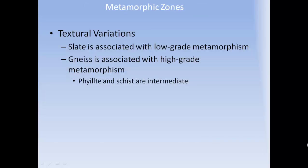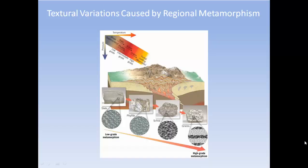Textural variations: slate is associated with low-grade metamorphism and gneiss with high-grade metamorphism, while phyllite and schist are in between. Regional metamorphism causes these textural variations, progressing from low-grade slates through phyllite and schist to gneiss.